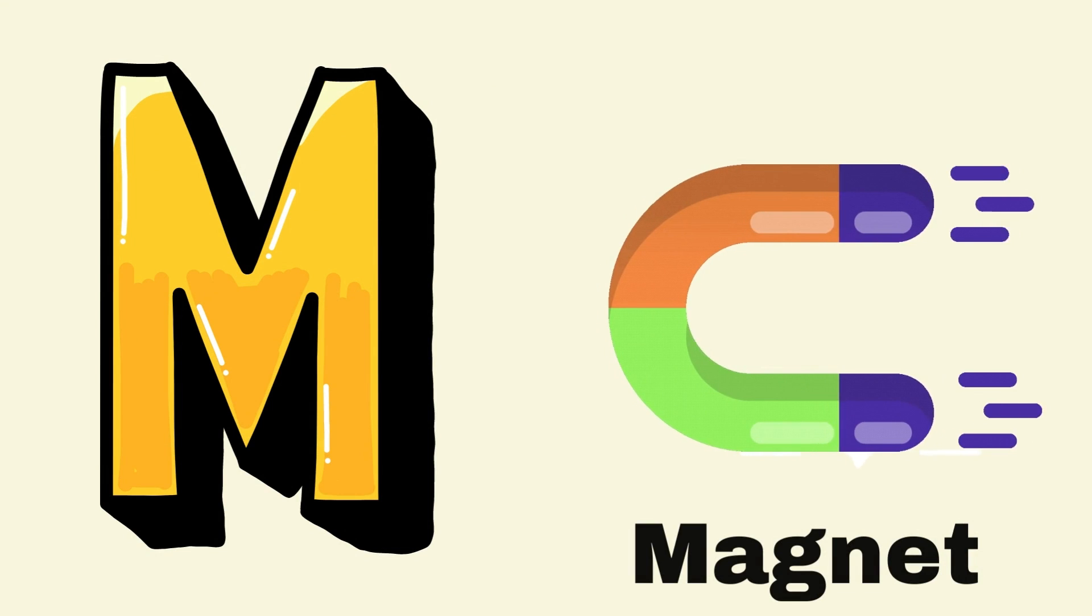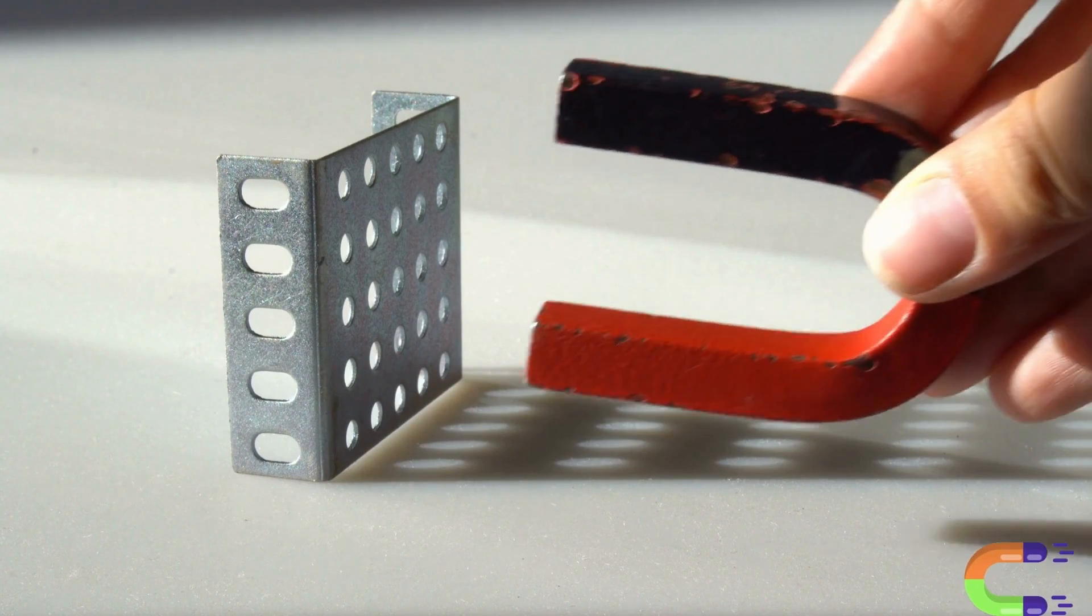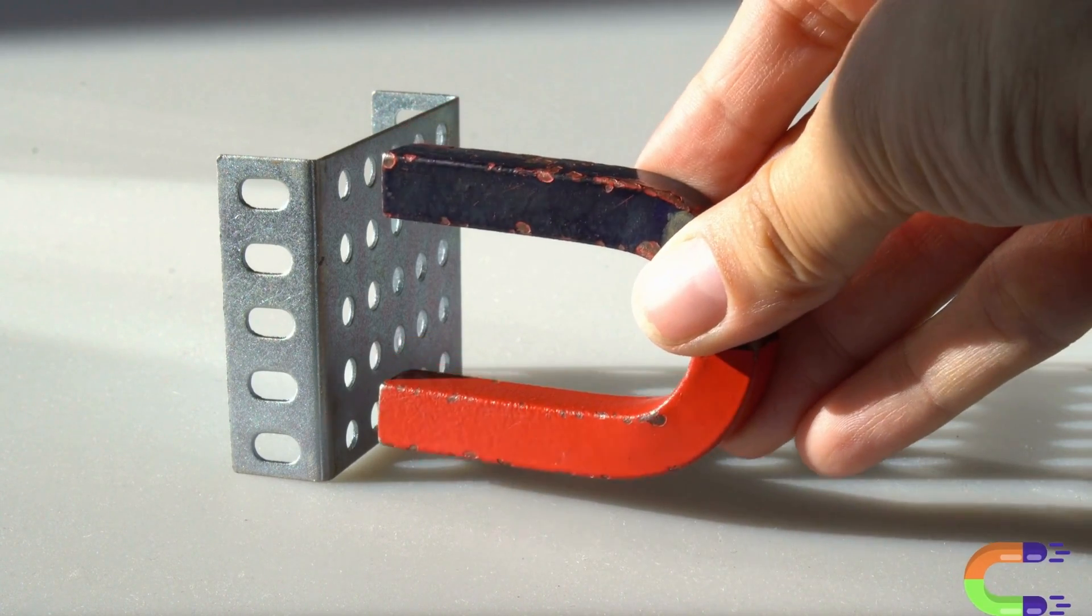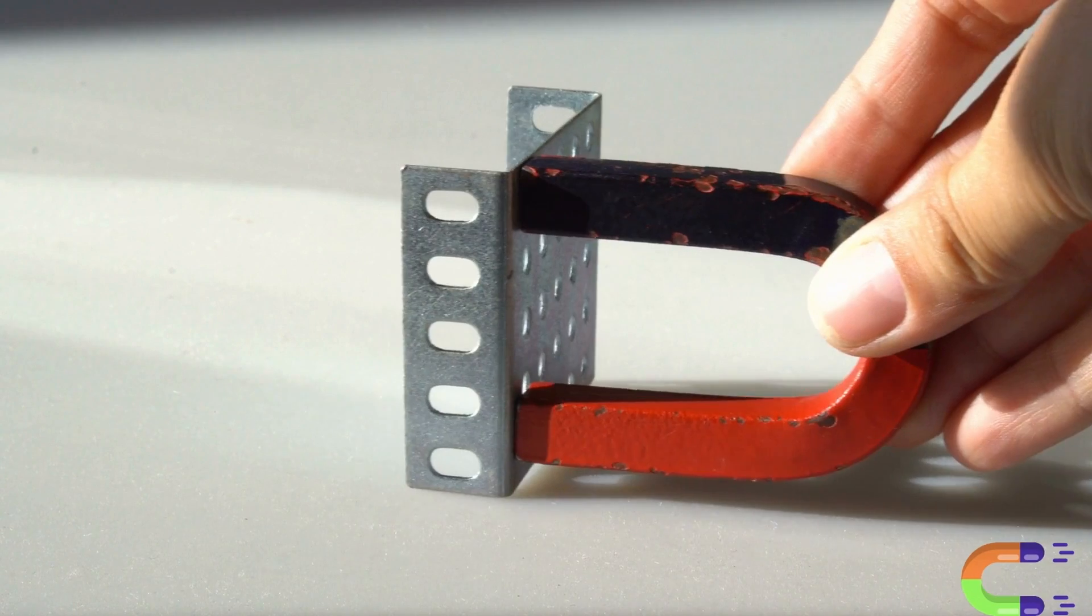M for Magnet. A magnet is a special object that can attract certain things. Like metal objects or other magnets, the pulling force it brings.